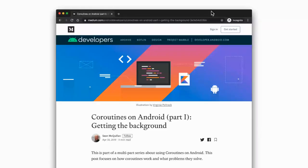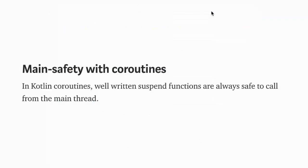Of course we can do something more interesting than just a delay using coroutines. Let's talk about a really important concept: main safety. In a blog post by Sean McKelan, there is an important concept — in Kotlin coroutines, well-written suspend functions are always safe to call from the main thread. They are safe because even if something blocks the thread, the thread isn't blocked — it's just suspended.